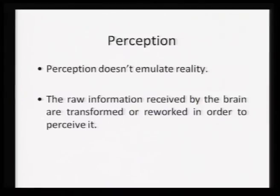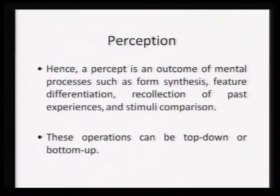The raw information received by the brain is always transformed or reworked in order to get perceived. It is not just raw signal processing — if only raw information were processed, your brain and my brain under the same biological conditions should process information the same way, but that does not happen. All this information received through our sensory process actually gets reworked, transformed, and then we attach meaning to it. A percept is therefore an outcome of mental processes such as form synthesis, feature differentiation, and recollection of past experiences — along with comparison of stimuli — that helps us perceive things.